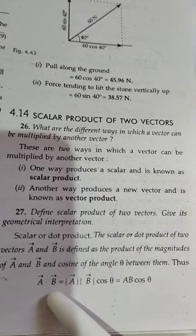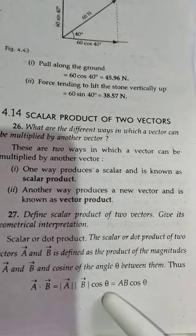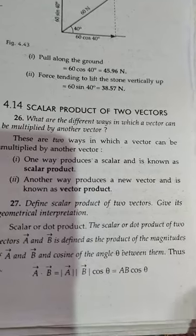Thus, A·B = |A||B|cos(θ) = AB cos θ. This is a diagram showing vector A and vector B with the angle theta between them.